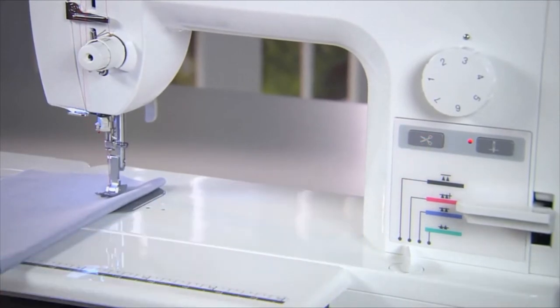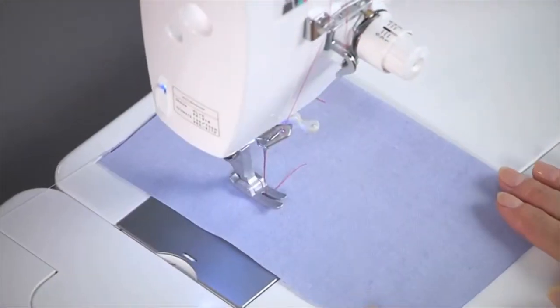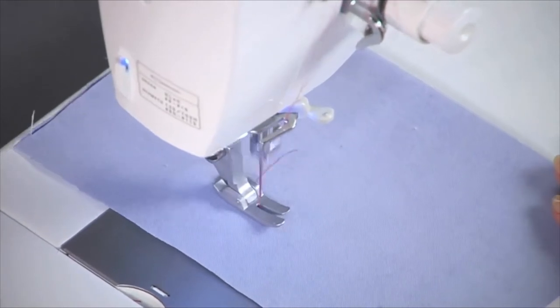When you're done with the row of stitches, simply touch the automatic thread cutter button, and both the top and bobbin threads will be cut. Your threads will also be instantly reset and are ready to go again when you are.